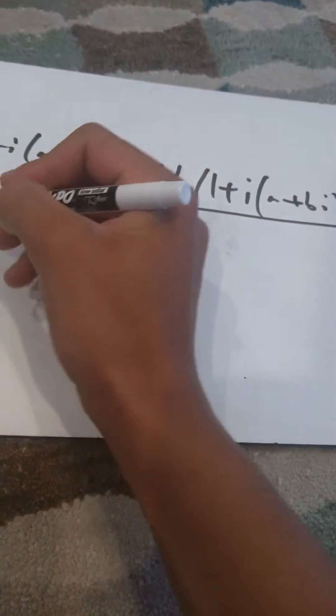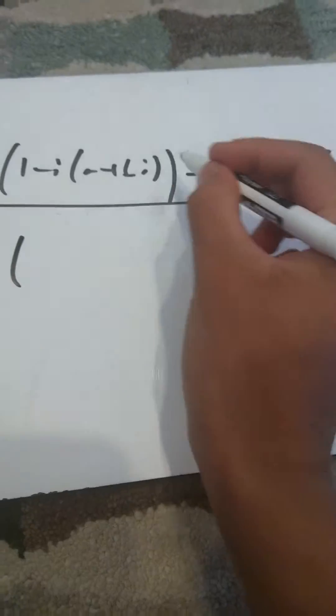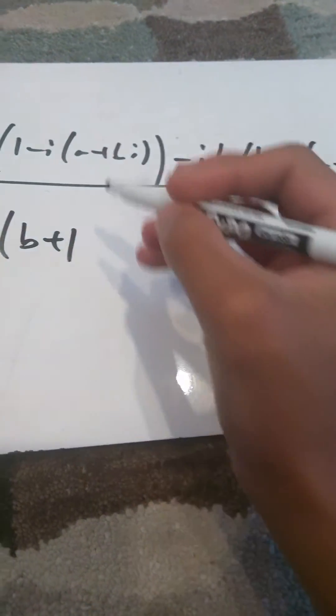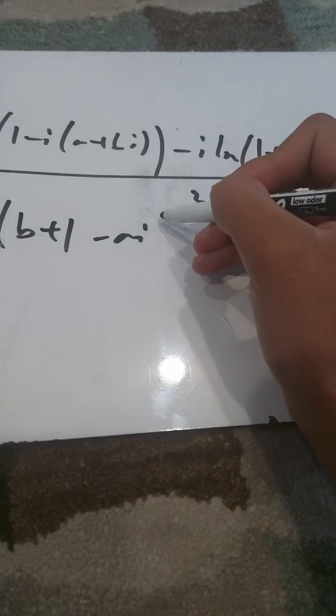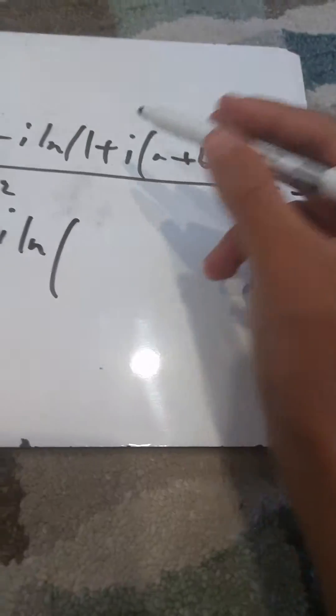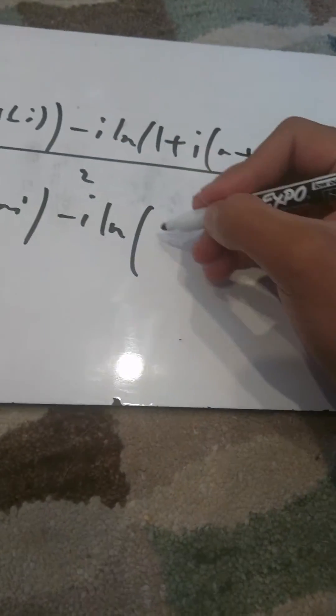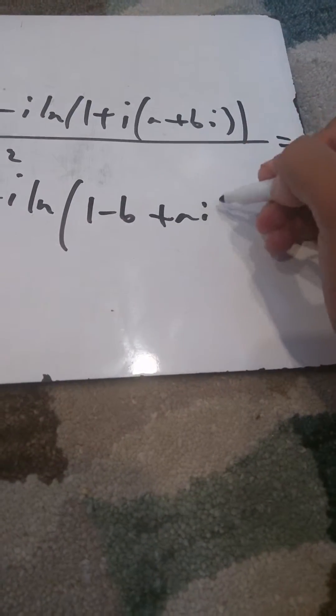And this equals i ln — we have minus i and bi, so 1 plus b, you can write b plus 1, minus ai — minus i times ln of i and bi, so 1 minus b. Actually 1 plus b. And then here we have 1 minus b, plus ai. And then over 2.